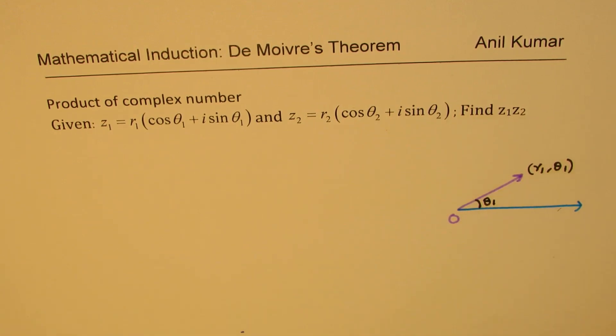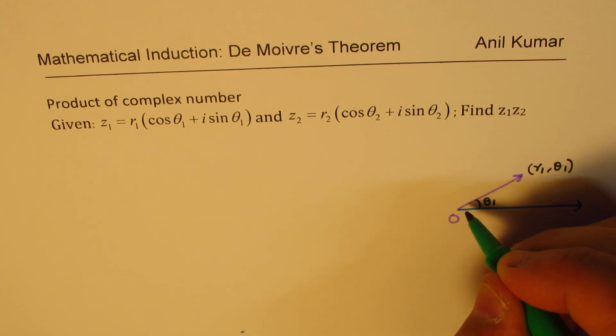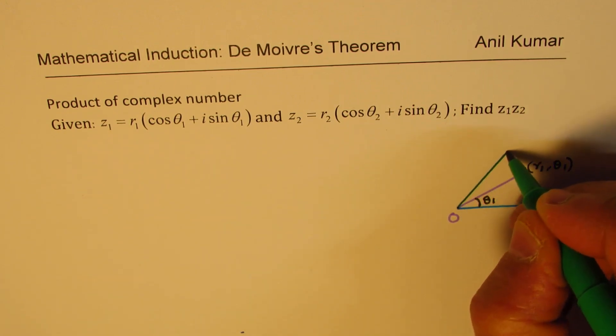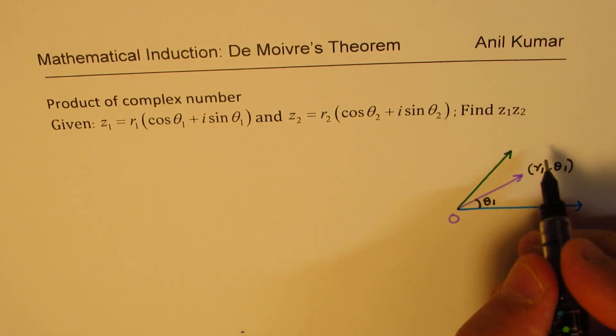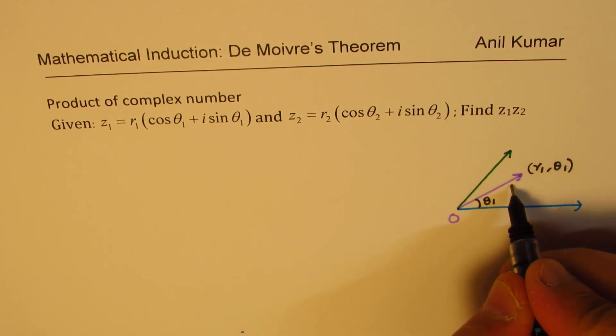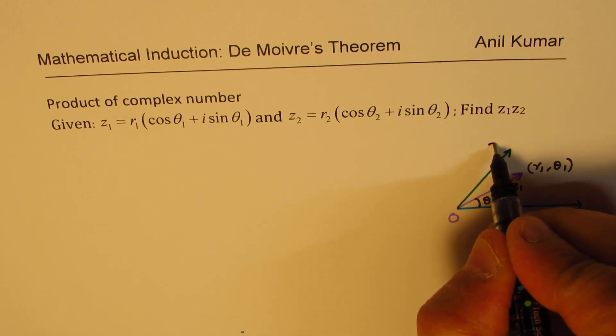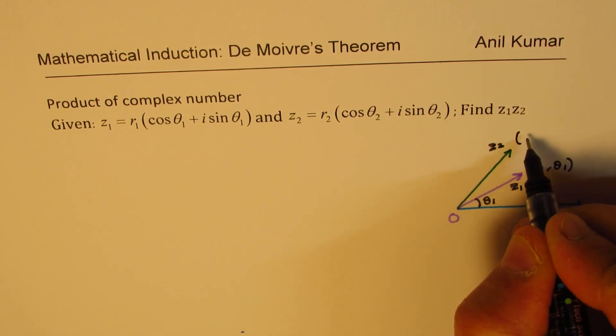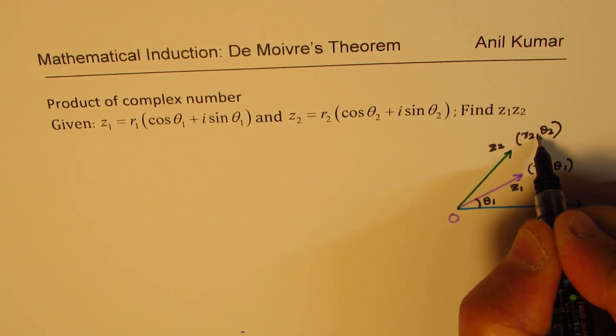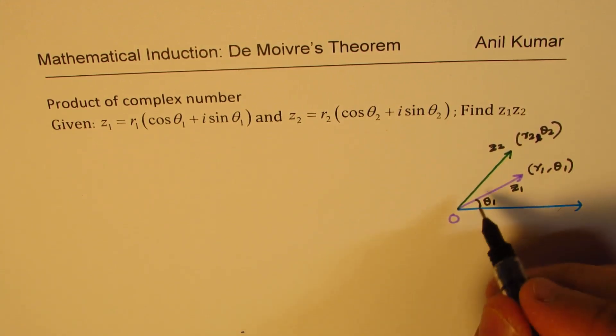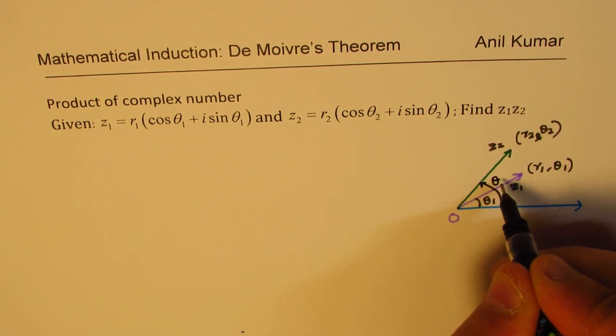Now let us assume that z2 is this complex number. This is z2 which has the absolute value of r2 and the argument of theta2. So this angle here counterclockwise will be theta2.